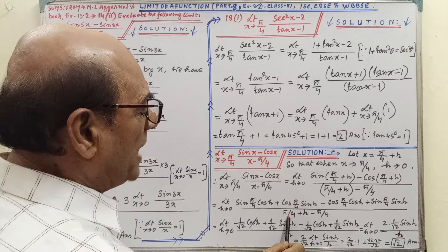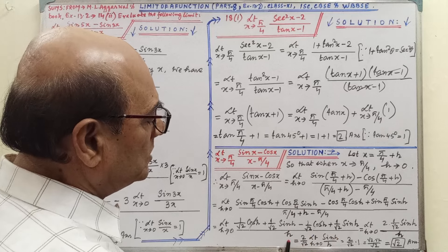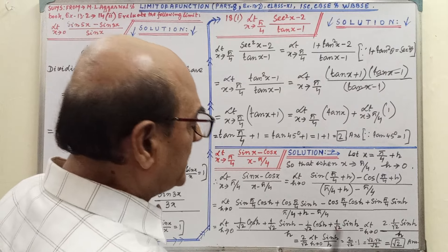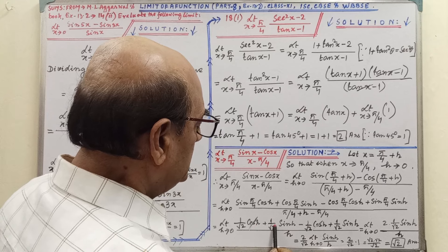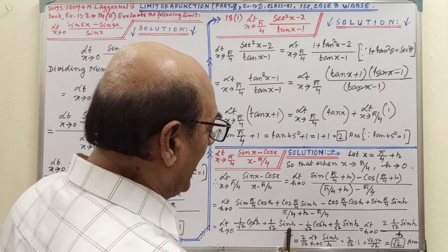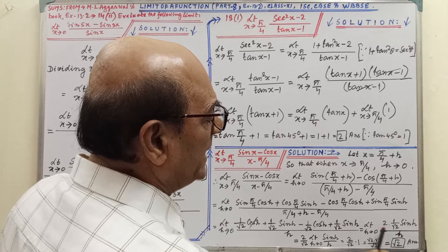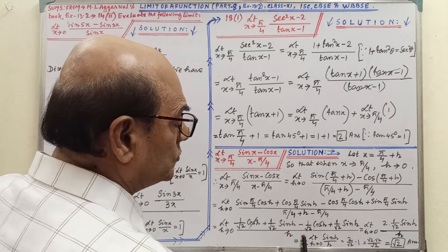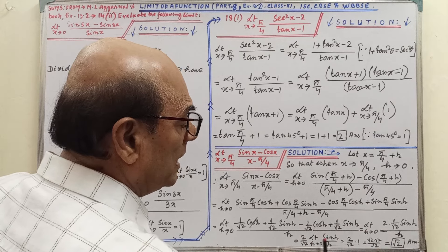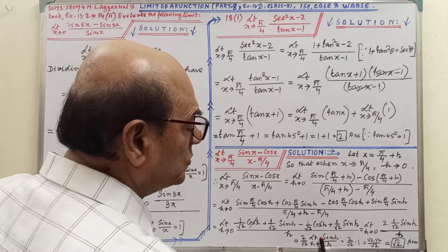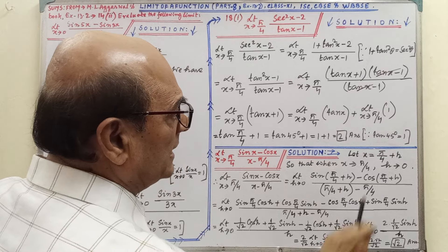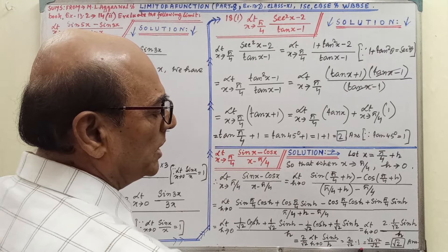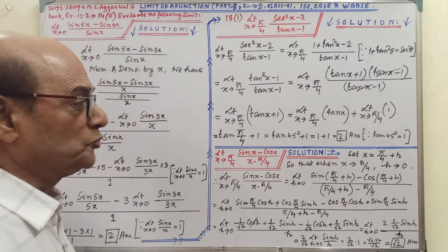Then 1/√2 · sin h and 1/√2 · sin h, by adding we get 2/√2 · sin h. The constant part 2/√2 comes outside of the limit, and what remains is sin h by h — now we have the frame of the formula. Since sin x by x equals 1, by applying the formula we get 1, and then by simplifying we are getting root 2 as the answer.